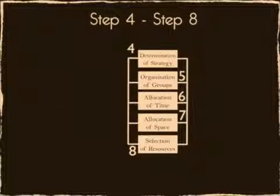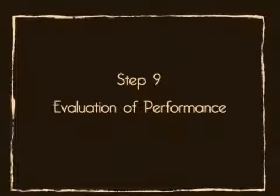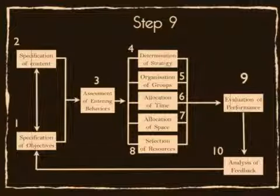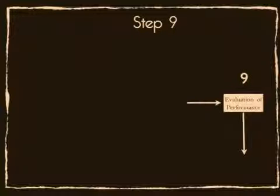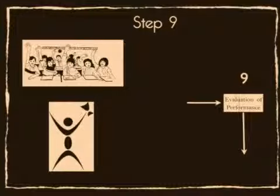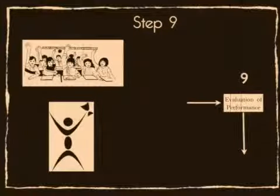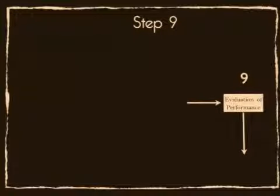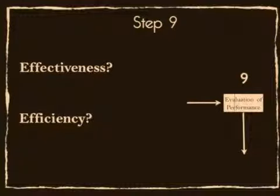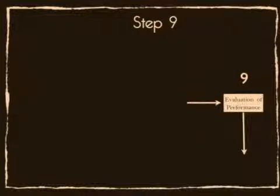With this complete, the model turns to Step 9, Evaluation of Performance. This step asks more questions of the instructor. For example, how will students be measured on achievement and attitude toward content and instruction? Or, what is the overall effectiveness and efficiency of the lesson? Step 9 helps account for the learner's performance and feedback.